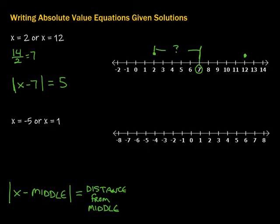Now, let's just check this and make absolutely sure that it works. So if I plug in these x values, it should work. So 2 minus 7 would be negative 5. The absolute value of negative 5 is 5. So far, so good. If we put in 12, 12 minus 7 is 5, the absolute value of which is also 5. So life is good. There is our equation that has those two solutions right there.